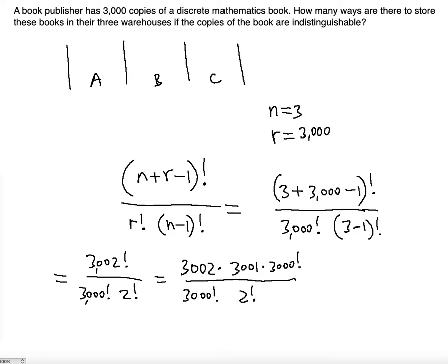As you can see, the 3,000 factorial cancels out. This becomes 1501 because 3002 divided by 2 factorial, which is 2, equals 1501. So using your calculator you're gonna have 1501 multiplied by 3001.